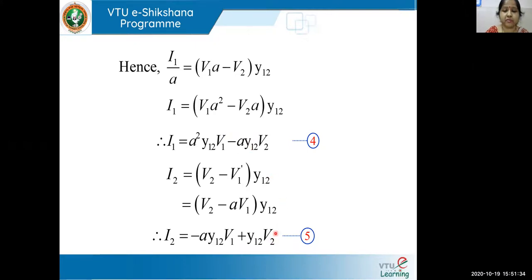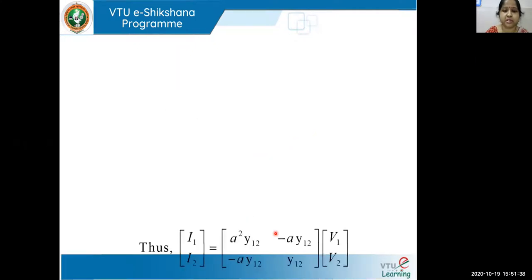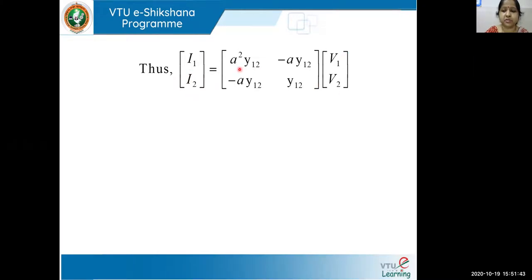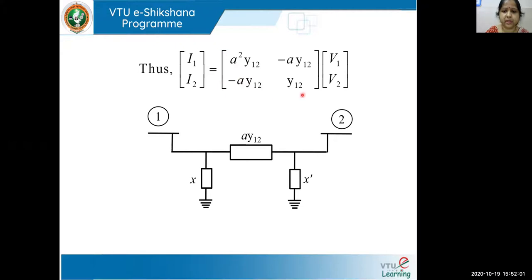Writing equations 4 and 5 in matrix form gives the YBUS. The diagonal elements Y11 = a²·y12 and Y22 = y12; off-diagonal elements Y12 = Y21 = −a·y12. The off-diagonal elements represent the negative of the series admittance, so in the pi model the series branch is a·y12. The diagonal elements usually include the half-line charging admittance — represented as x and x dash — whose values we need to determine.